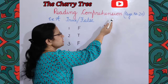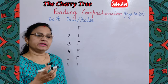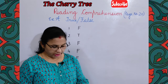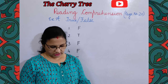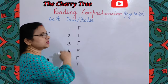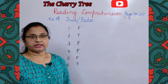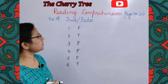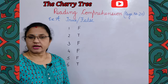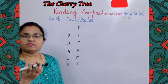Next is reading comprehension on page number 20. Under this, a few true/false questions are given — write T for right statement and F for wrong statement. First: Rakesh ate all the cherries before he reached his grandfather's house. This is false. Second: His grandfather told him stories about animals and ghosts. This is true. Third: The cherry tree grew slowly in the monsoon. This is false — monsoon mein woh teiz badhta hai.